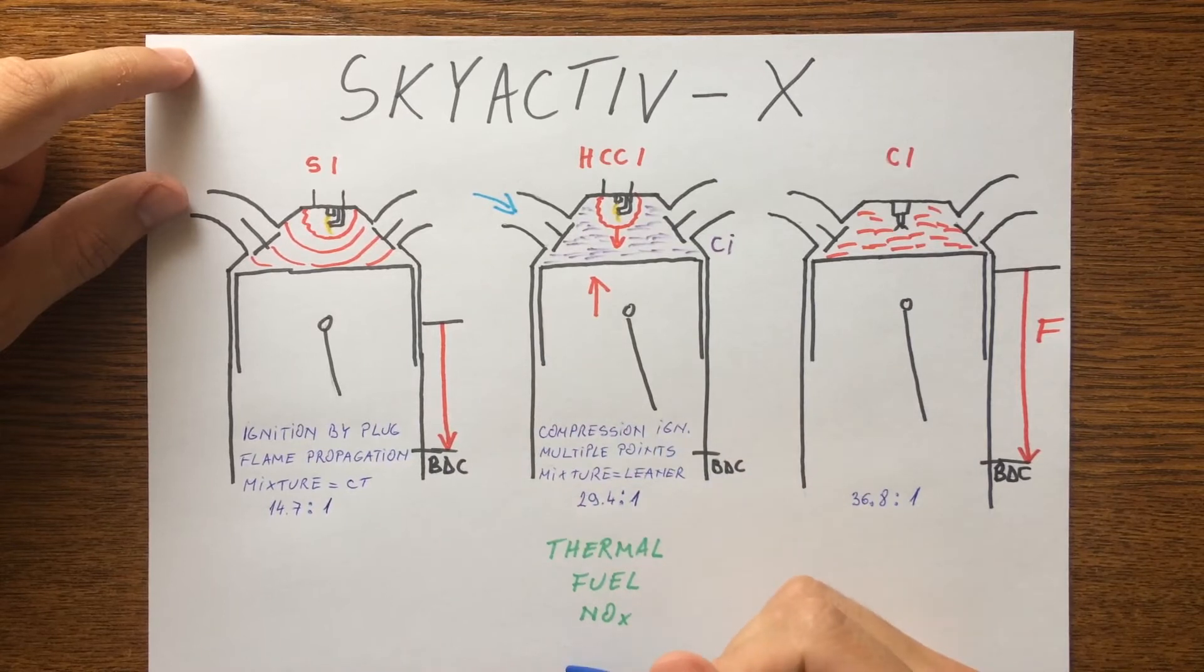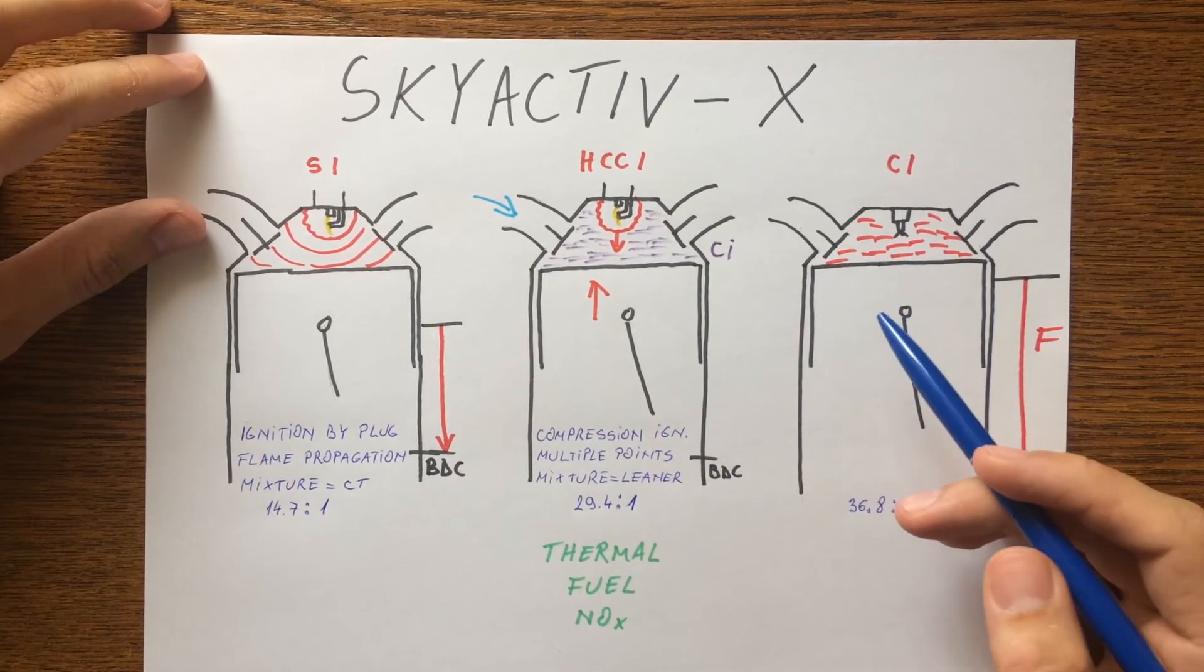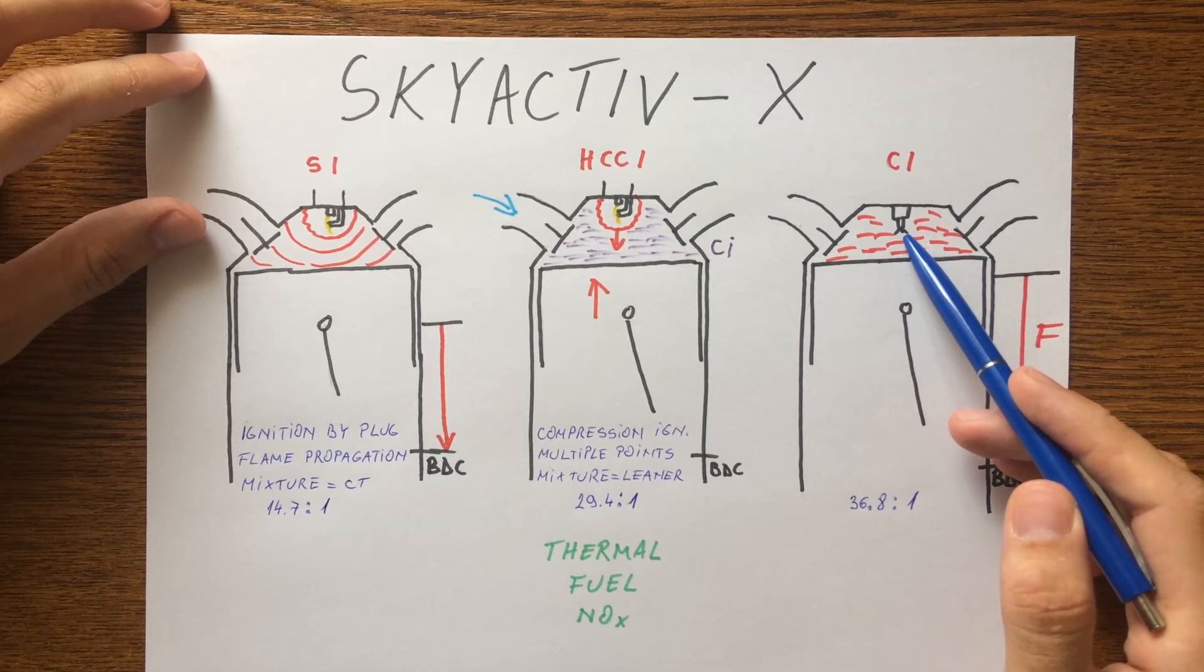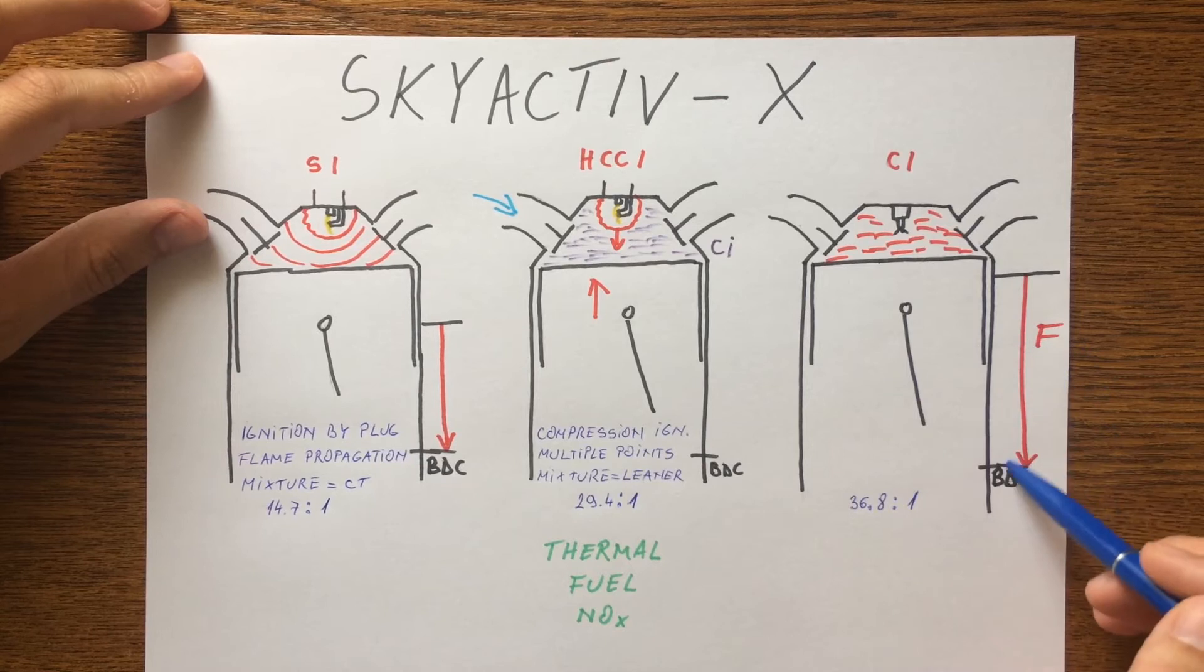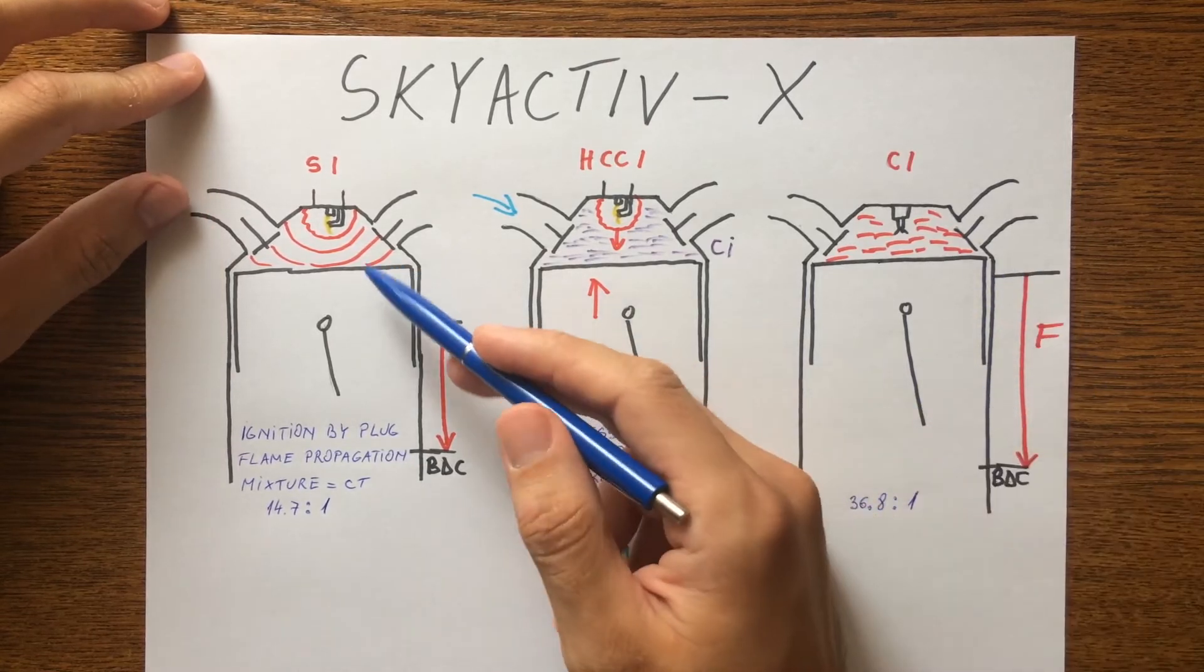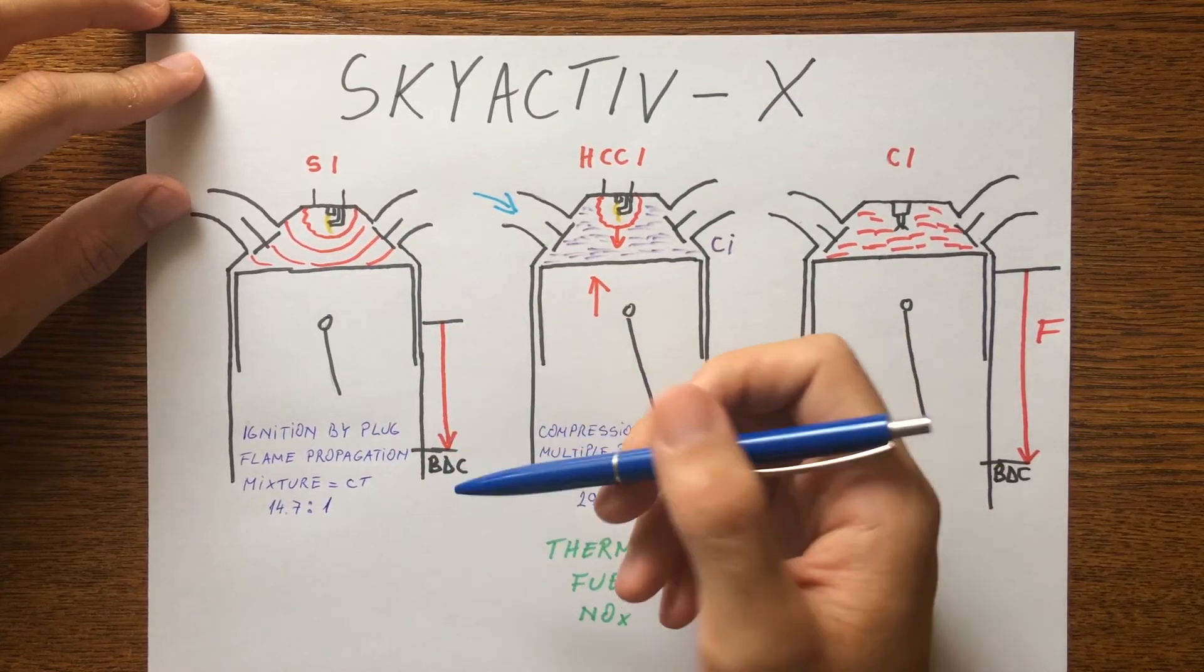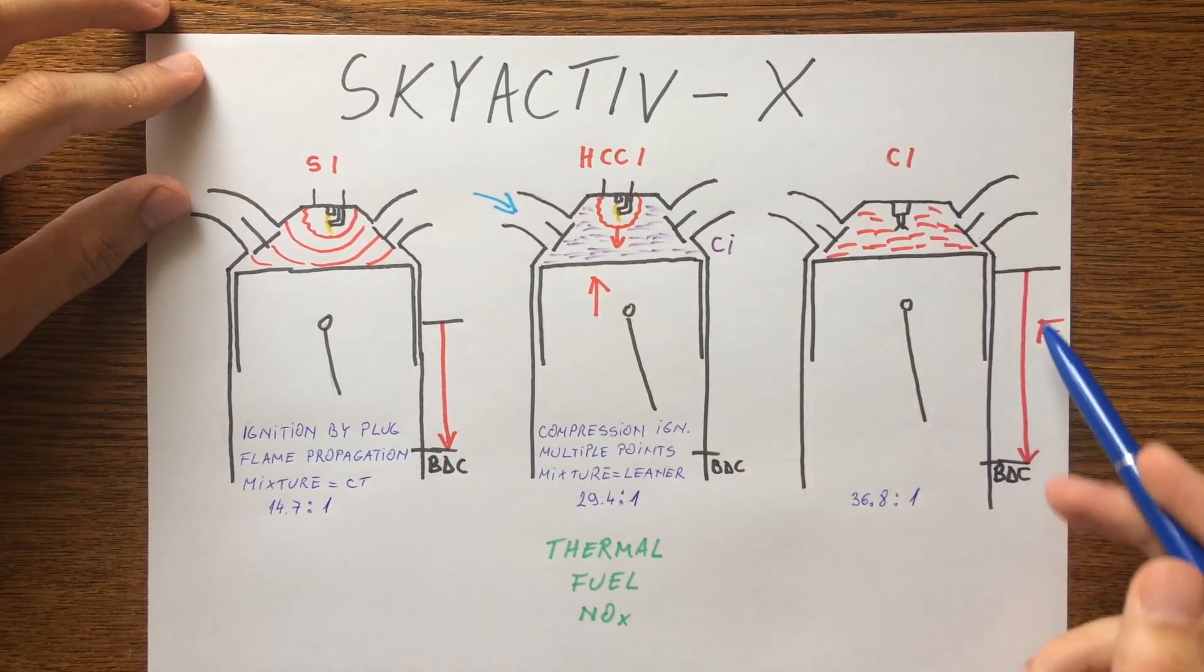And as I said, spark ignition will not combust such a thin air-fuel mixture. Another thing is that combustion takes place very rapidly, burning everywhere right after the piston starts moving down from top dead center, whereas a spark ignition engine takes time for the flame to spread. Burning rapidly means a force that pushes down the piston for a longer time, which means better efficiency. For a spark ignition engine, the time is shorter.